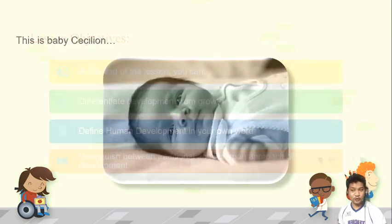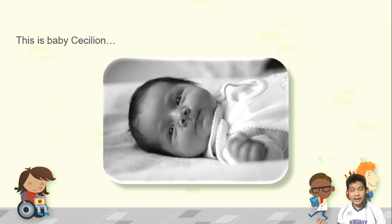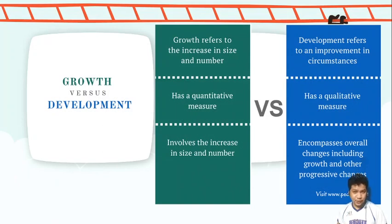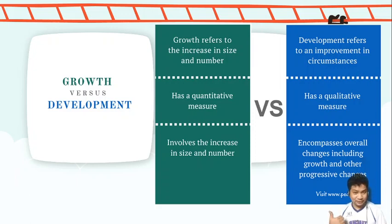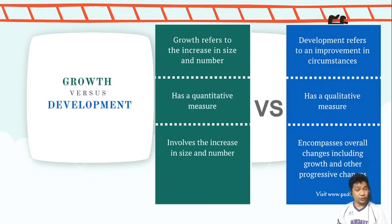We will use Baby Cecilion as our example throughout these concepts. Let's start with the first agenda: growth and development. Try to recall your answers from the first activity. Is growth and development the same? Are they different? Or are they related? The answer is yes, they are related, but they are not the same. Growth actually refers to the increase in size and number, while development refers to an improvement in circumstances.